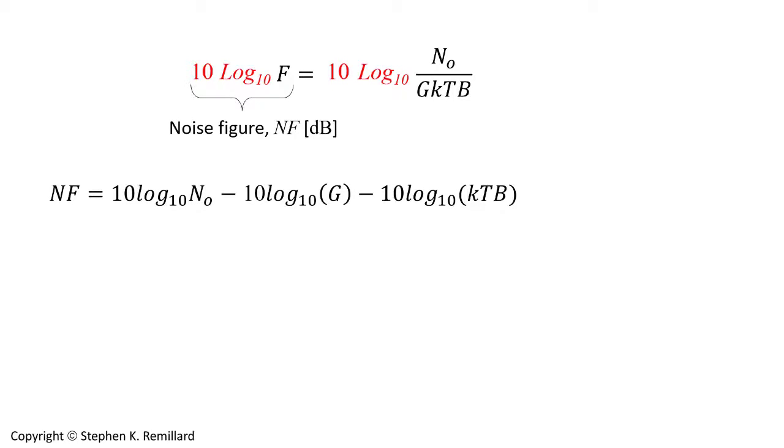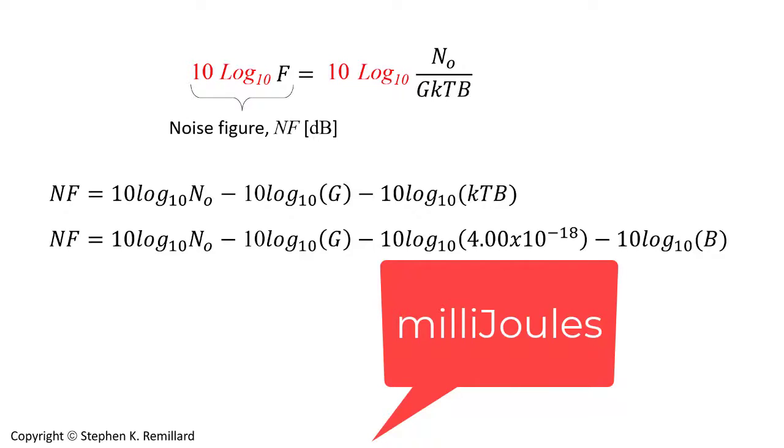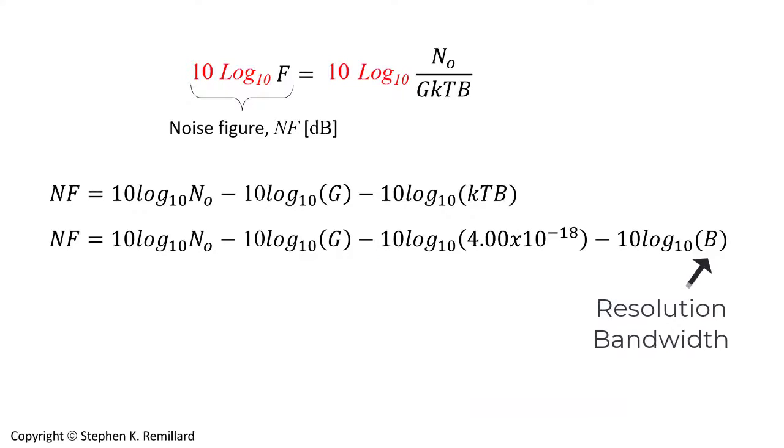I'll bring G KTB into a minus logarithm. Let's break it apart one more step and get B all by itself. At room temperature KT equals conveniently 4.00 times 10 to the minus 18. In my measurements I'll always set the measurement bandwidth, the resolution bandwidth of the spectrum analyzer to 1 Hertz. That will make this last term go away.